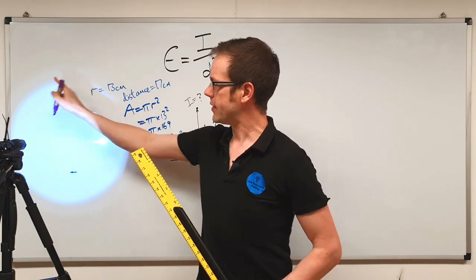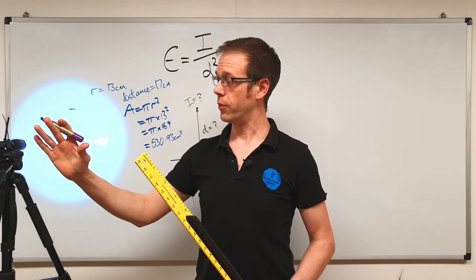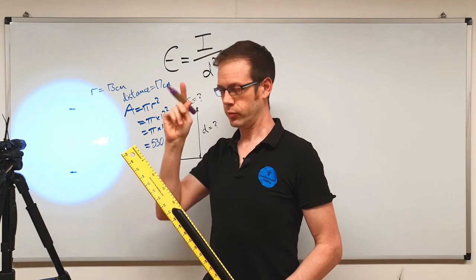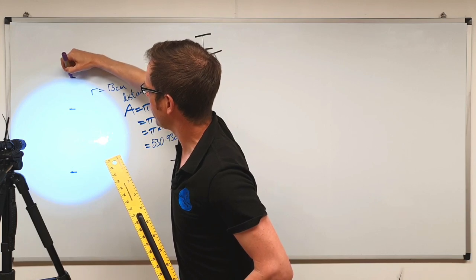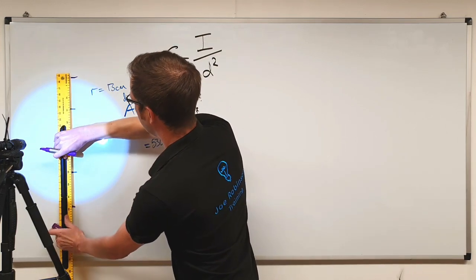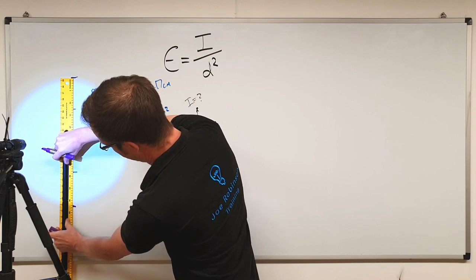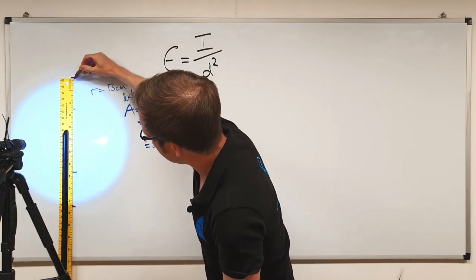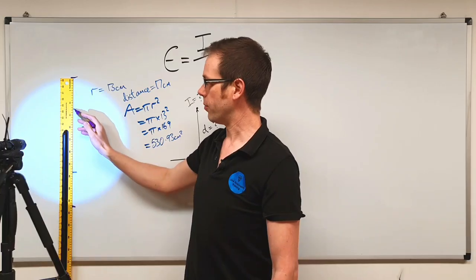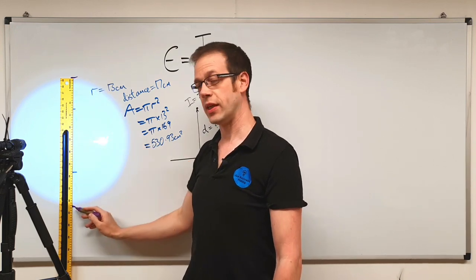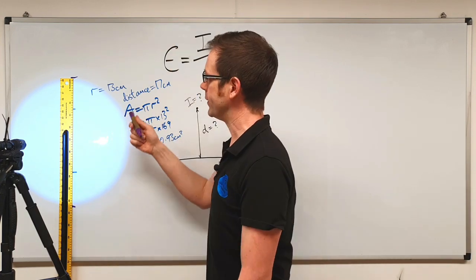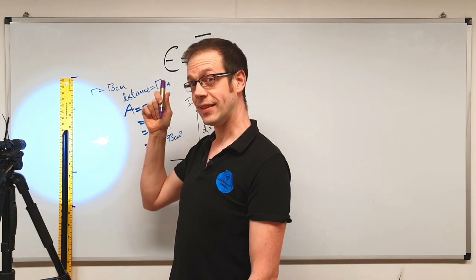Let's think about what's happened to this area. The area has clearly got larger — as we've moved the light further away, the area that the light is covering has got larger. But how much larger? If we look at the diameter of this pool of light and measure it up, we can see we're now at a diameter of 52 centimetres. It's gone from 26 centimetres to 52 centimetres, and the radius has also doubled — it's now up to 26 centimetres.